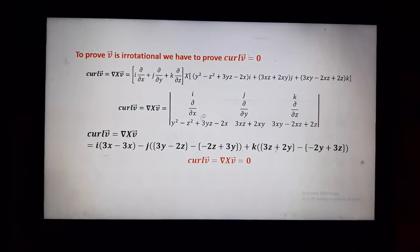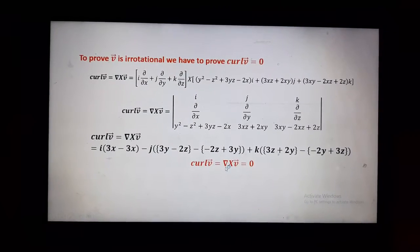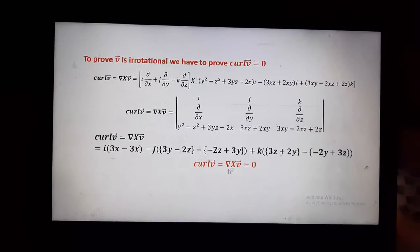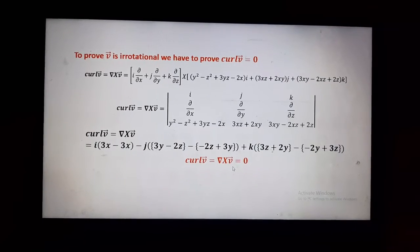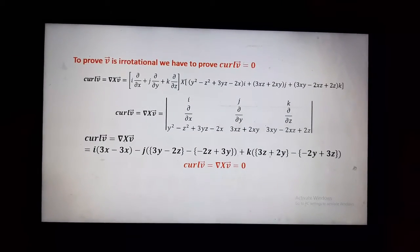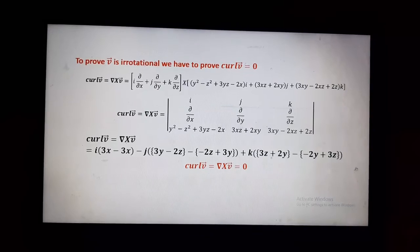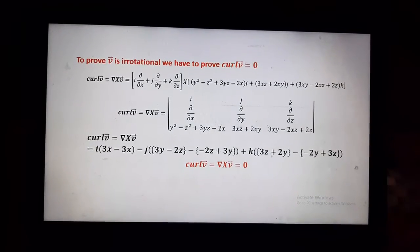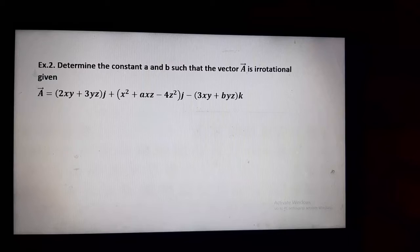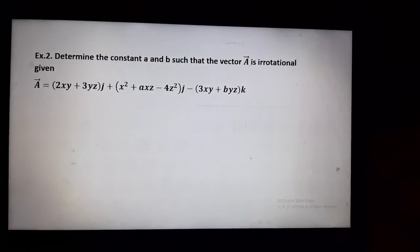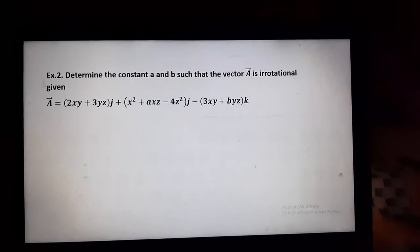Now we will simplify this determinant. We will get curl of vector V equal to zero. Therefore we can say vector V in this example is both solenoidal and irrotational.